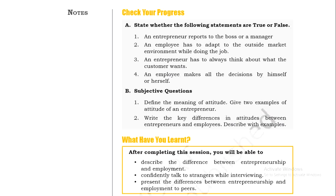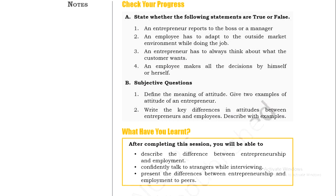Give two examples of the attitude of an entrepreneur. Then write the key differences in attitude between an entrepreneur and an employee — describe with examples. Determine how an entrepreneur can find problems. Then conduct interviews with an entrepreneur and an employee to understand how an entrepreneur can talk to a stranger during interviewing. Present the differences between entrepreneur and employee to your peers — share the differences with your peer group.